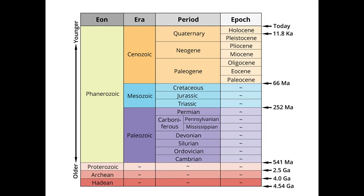As you can see in the figure, the Paleozoic era extends from 541 million years to 252 million years. For the Mesozoic it is 252 to 66 million years. After 66 million years comes the Cenozoic era, which continues till the present.